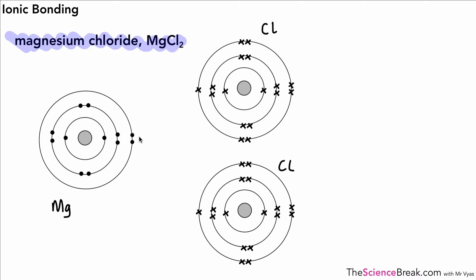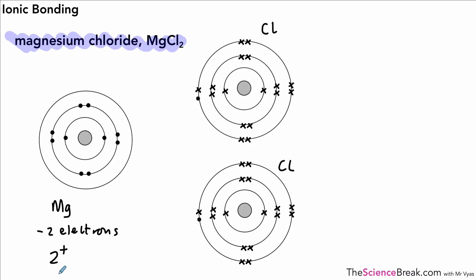Magnesium is in group two, so you can see two electrons in the outer shell. One electron is transferred to one chlorine atom and the other to the second chlorine atom. Therefore magnesium has lost two electrons — it has lost two negative charges — so it's left with a plus two charge. The magnesium ion has two extra protons compared to its electrons, giving it a plus two charge.